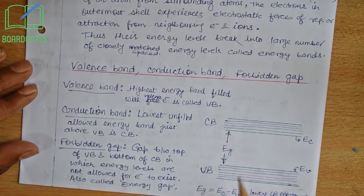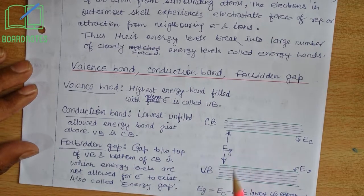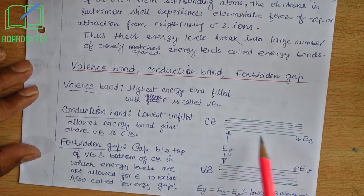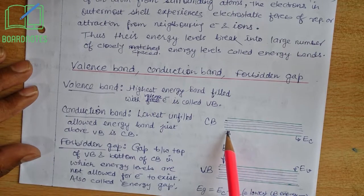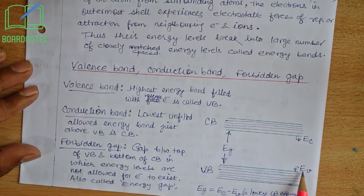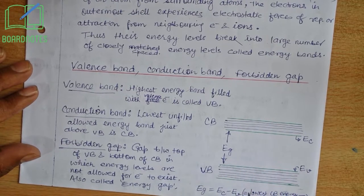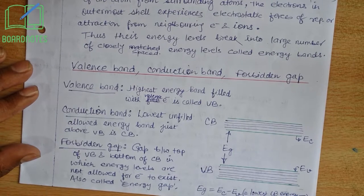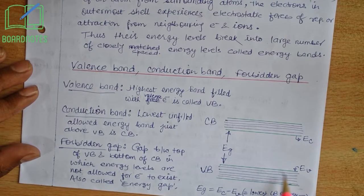In between the valence band and conduction band, there is a gap. This gap is called the forbidden gap. The forbidden gap is the gap between the conduction band and valence band. The bottom of the conduction band has energy level equal to EC, and the top of the valence band has energy level equal to EV. The difference between these two is called the energy gap, Eg, given as EC minus EV — that is, the lowest conduction band energy minus the highest valence band energy.